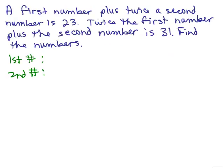Next problem: a first number plus twice a second number is 23. Twice the first number plus the second number is 31. Find the numbers.